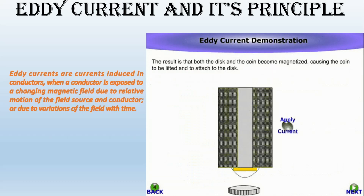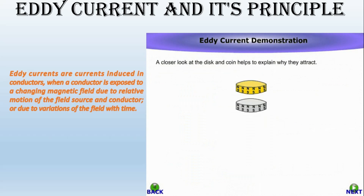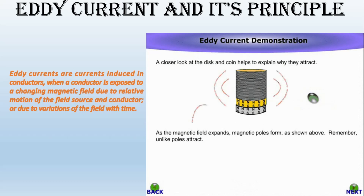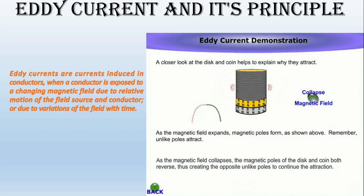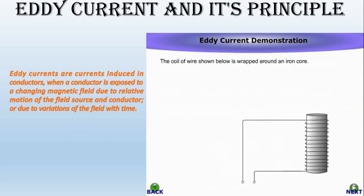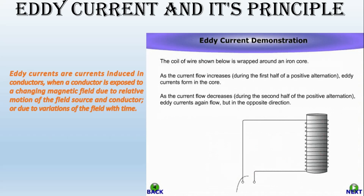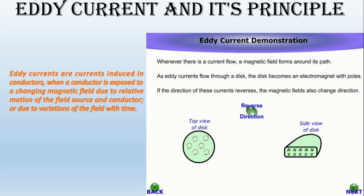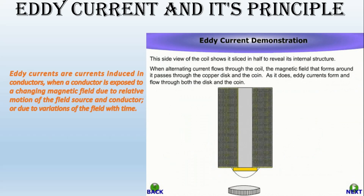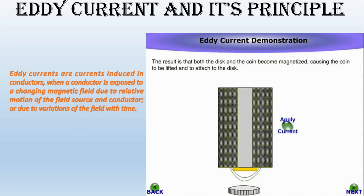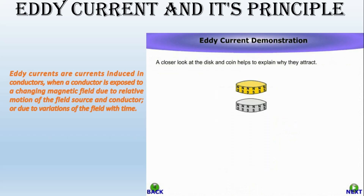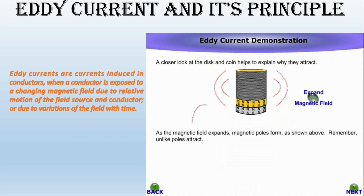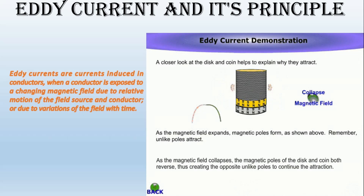Eddy currents are induced in conductors when a conductor is exposed to a change in magnetic field, due to relative motion of the field source and conductor, or due to variations of the field with time. This can cause a circulating flow of electrons, or a current, within the body of the conductor. These circulating eddies of current have inductance and thus induce magnetic fields. These fields can cause repulsive, attractive, propulsion, and drag effects. The stronger the applied magnetic field, or the greater the electrical conductivity of the conductor, or the faster the field changes, then the greater the currents that are developed and the greater the fields produced.